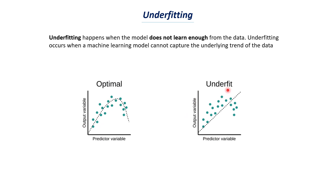This is how an underfitting model looks like — it does not find that particular trend. The trend is: first the y value increases with increase of x and then it decreases. Whereas this underfitting model cannot find the trend — it just fits the data in a simple line. This is a linear regression model, and this is an example of an underfitting problem. Whenever a model cannot find the trend present in the data, the model is under-trained and this problem is called underfitting.